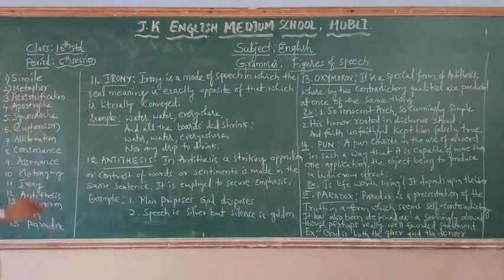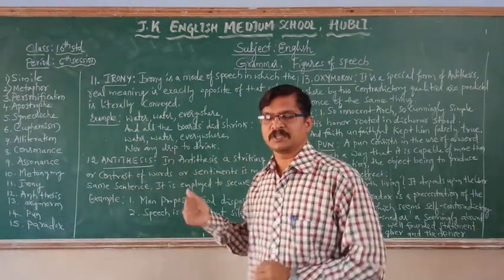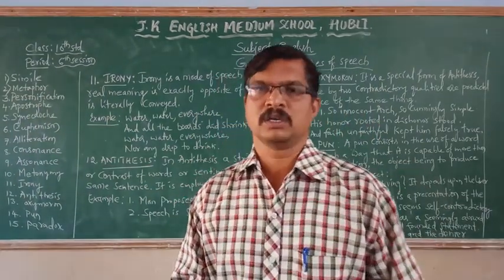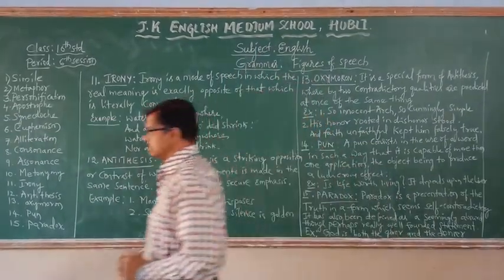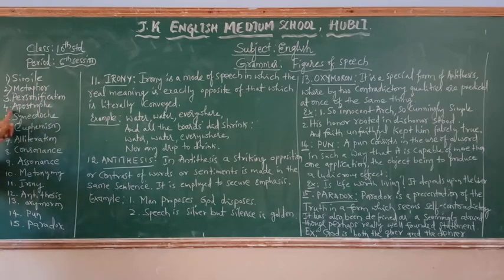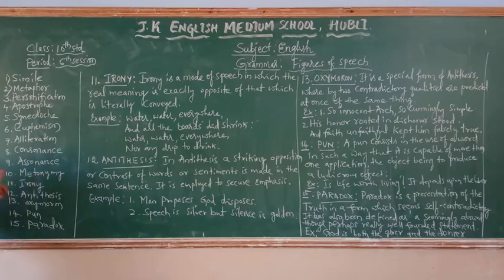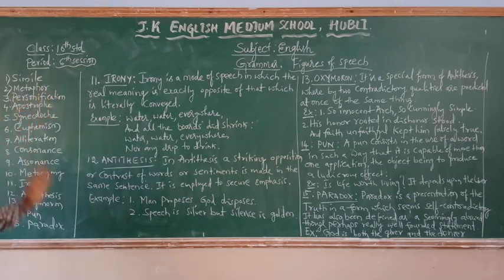I have written the explanation carefully — open your notebook and grammar book and write these down. The first type is simile, second metaphor, third personification, fourth apostrophe, fifth synecdoche, sixth euphemism, seventh alliteration, eighth consonance, ninth assonance, and tenth metonymy. All these ten types of figures of speech we have discussed in the previous sessions.